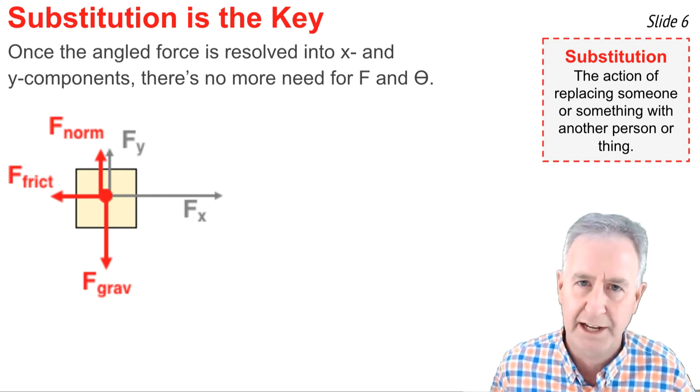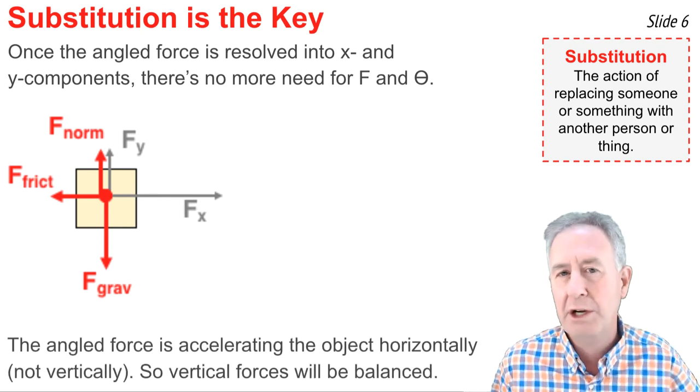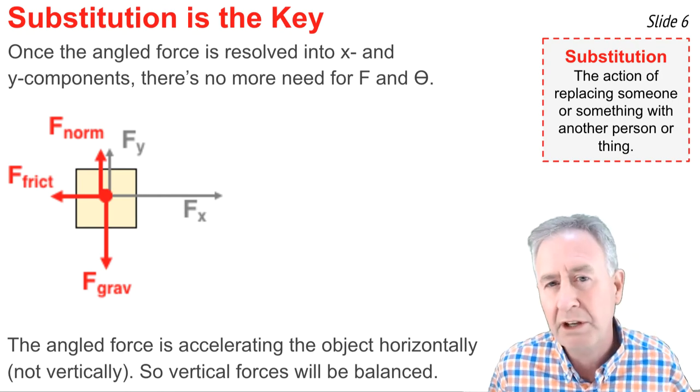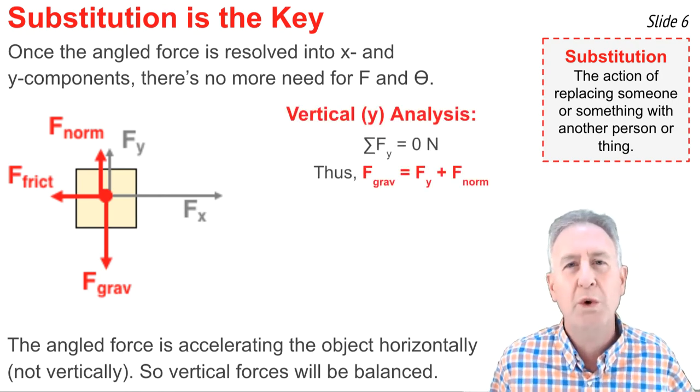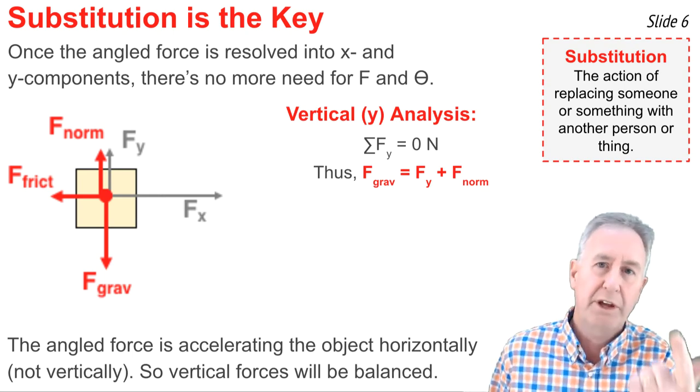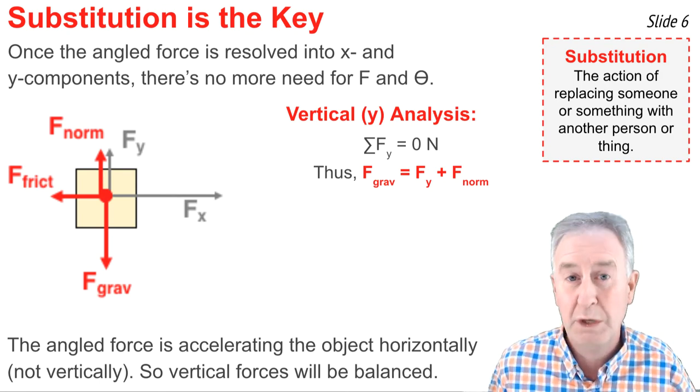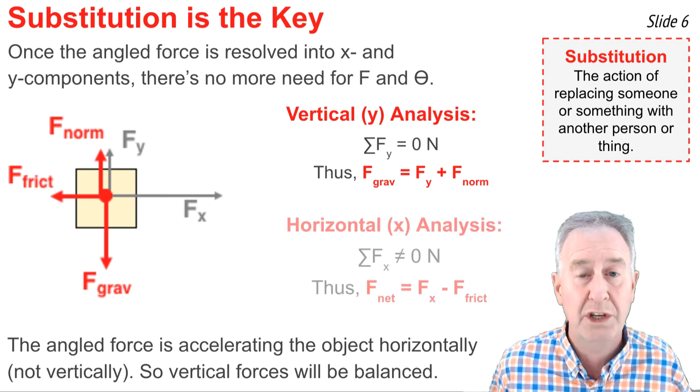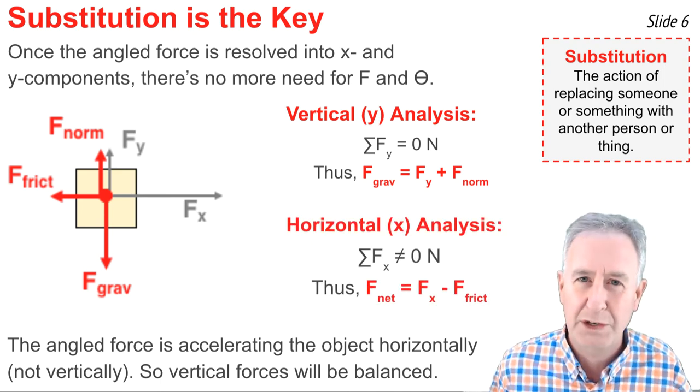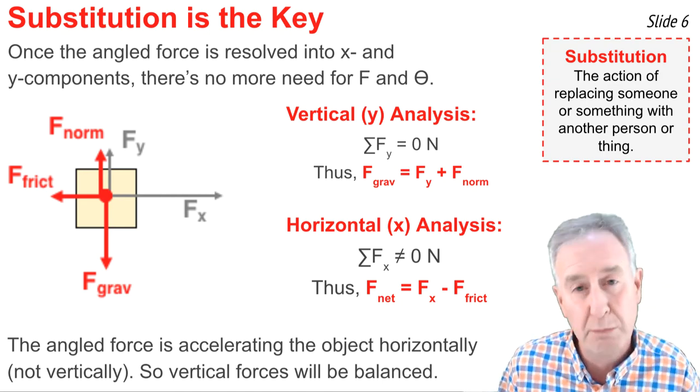Now when you think about the original context here, it was an angled force causing a horizontal acceleration. Since there wasn't any vertical acceleration, we know that the vertical forces balance each other. So when we go to think about net force, we don't worry about the vertical dimension because vertically the forces are balanced. In other words, F grav is equal to Fy plus F norm. Now when we worry about the horizontal situation, we consider the fact there's an acceleration, and therefore the sum of the horizontal forces is not zero. We have a net force, and it's calculated by taking the larger Fx and subtracting from it the smaller F friction.